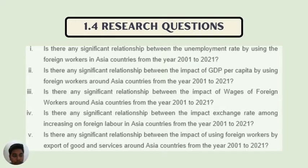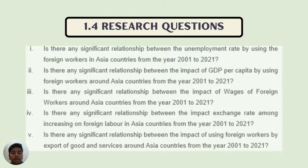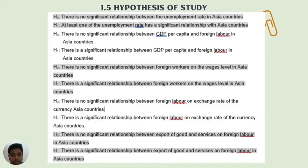Section 1.4 is about the research questions. We have five research questions: Is there a significant difference between the unemployment rate and the use of foreign workers in Asian countries from 2001 to 2021? What is the impact of GDP on the use of foreign workers in Asia? Is there a significant relationship between the exchange rate and the increase of foreign labor in Asia? Is there any significant relationship between the impact of using foreign workers on export of goods and services? And the fifth one is wages and salary. All hypotheses are discussed in Chapters 3, 4, and 5 to conclude whether they are significant or not.